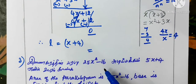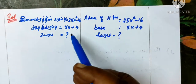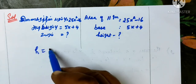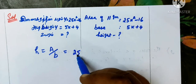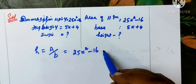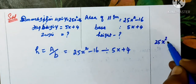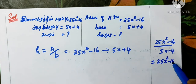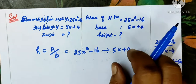Next is question number 3. The area of a parallelogram is 25x square minus 16. The base is 5x plus 4. Find the height. So height h equals area by base, equal to 25x square minus 16, divided by 5x plus 4.